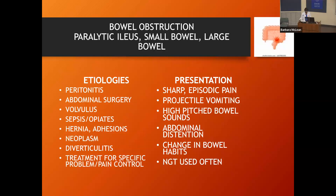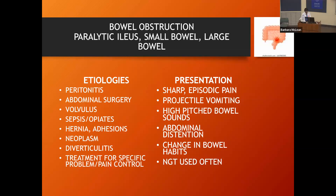Bowel obstructions are really common. Patients have paralytic ileuses occurring in the small and large bowel. Peritonitis is common in ETOH patients, those with abdominal surgeries, diverticulitis, and sometimes cancer. Treat the problem and prioritize pain control — patients with abdominal problems may not be able to take anything PO, so coordinate with the physician for IV pain medication. They may present with sharp, episodic pain and projectile vomiting, which indicates some type of obstruction.